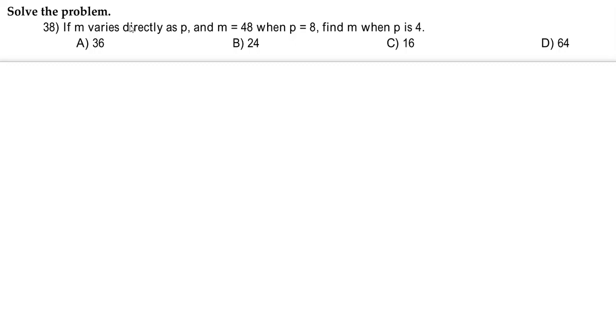Hey guys, so for number 38 we're going to solve the problem. If m varies directly as p and m equals 48 when p equals 8, then we're going to find m when p is 4.